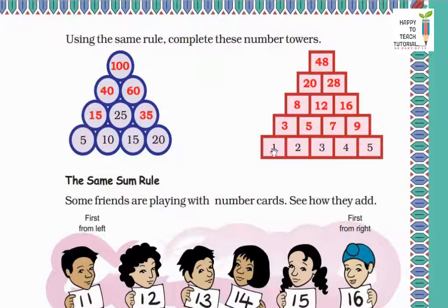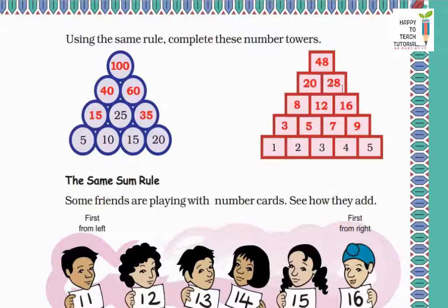Let's see another example. Starting from the bottom: 1 plus 2 equals 3; 2 plus 3 equals 5; 3 plus 4 equals 7; 4 plus 5 equals 9. We continue adding pairs of numbers going upward. Then 20 plus 28 equals 48. I hope the concept of number towers is clear to you.